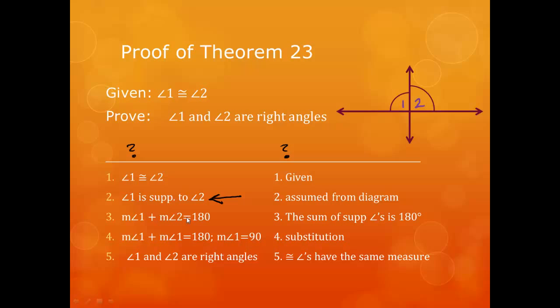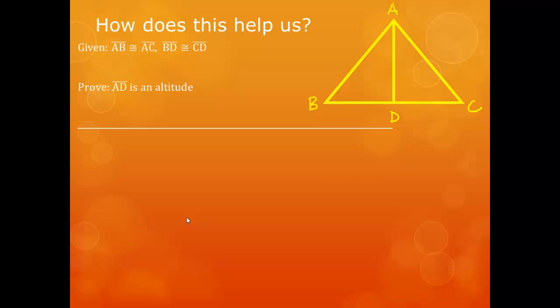All right, and you'll kind of get an idea as to how it's going to work in the next proof. So how does this help us out? Well, let's look at this one. We are given that AB is congruent to AC, that segment BD is congruent to segment CD, and we need to prove that AD is an altitude.